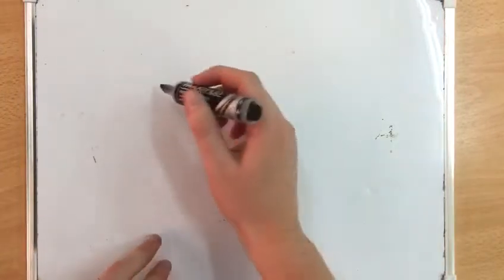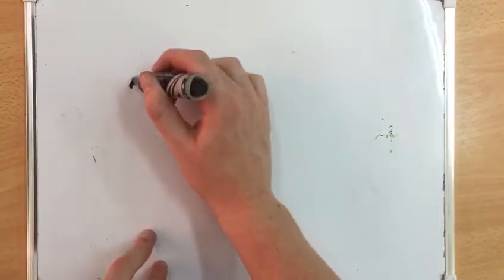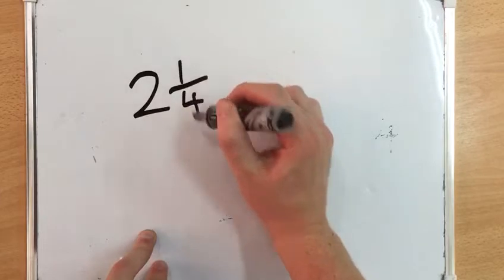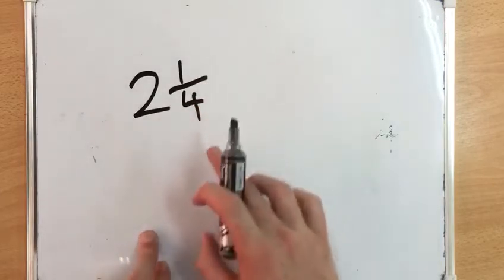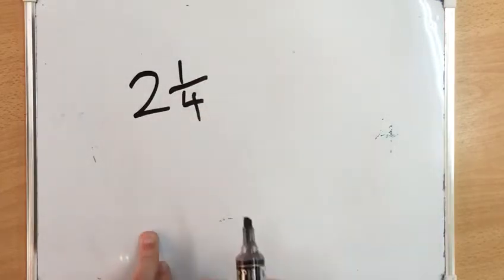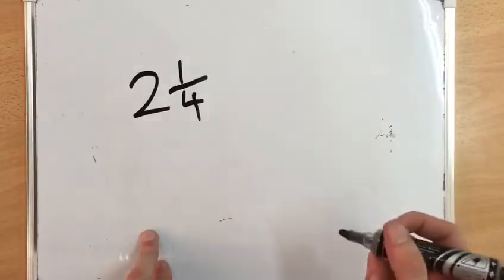Good morning everybody. Today we are learning about mixed numbers and improper fractions. Yesterday we learned that a mixed number is a whole number with a fraction. An example is 2 and 1/4.